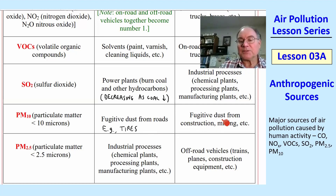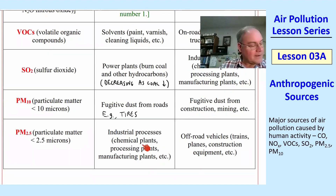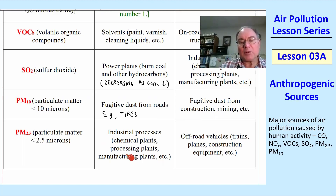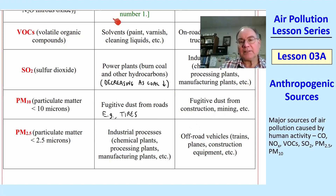The second major source of PM10 is fugitive dust from construction, mining, etc. Finally, PM2.5 are fine particles. The number one source is industrial processes — chemical plants, etc. Number two is off-road vehicles: trains, planes, construction equipment, etc.